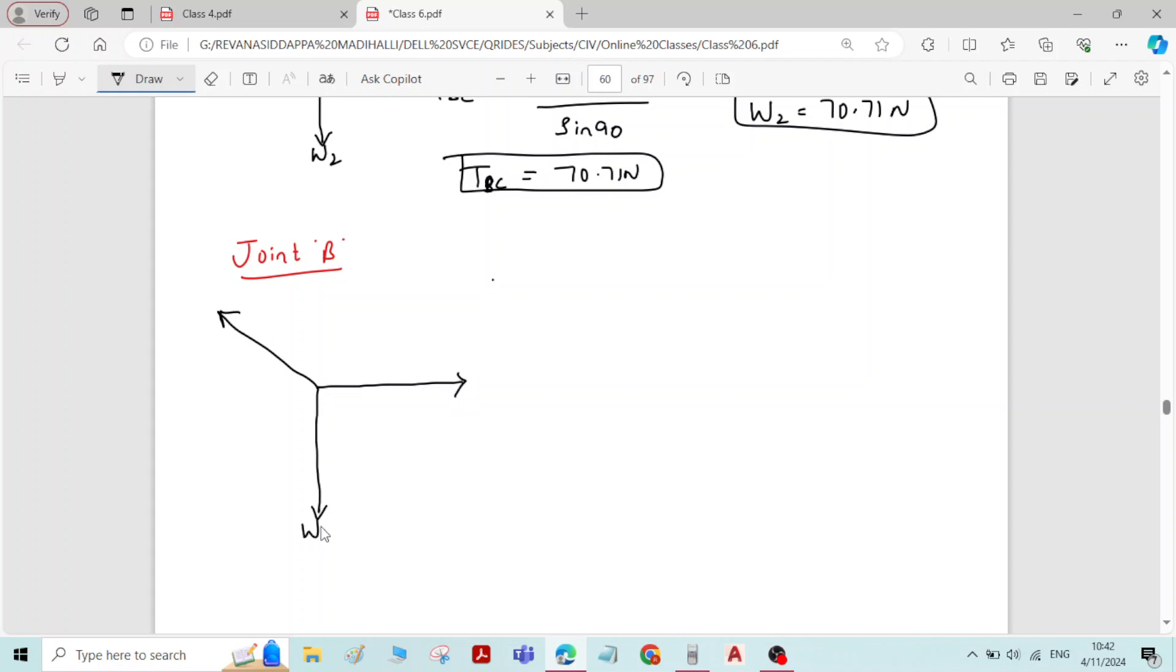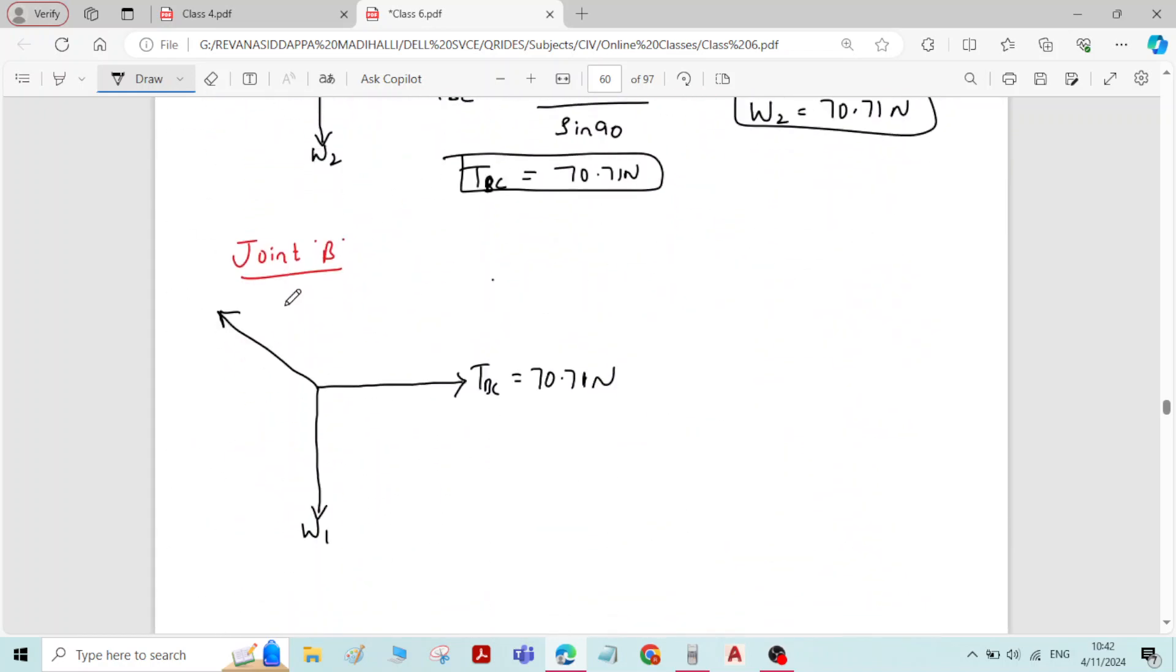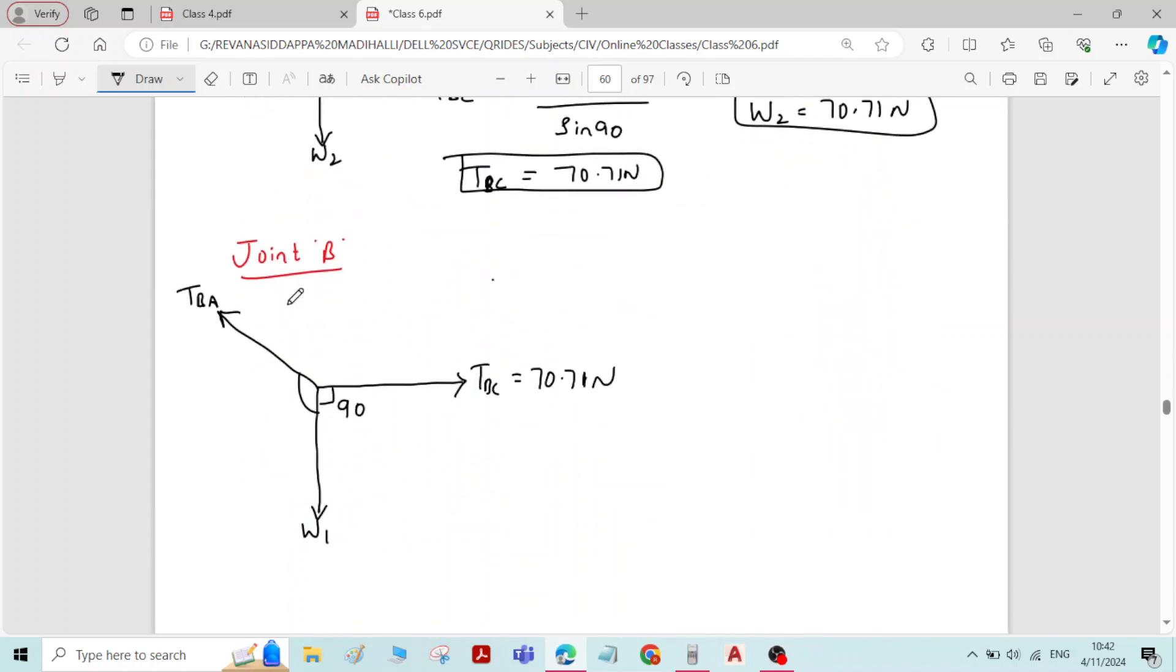This is W1. Here TBC is equal to 70.71 Newton, and TBA. Angles are 90 here, and this is 150 and 120.